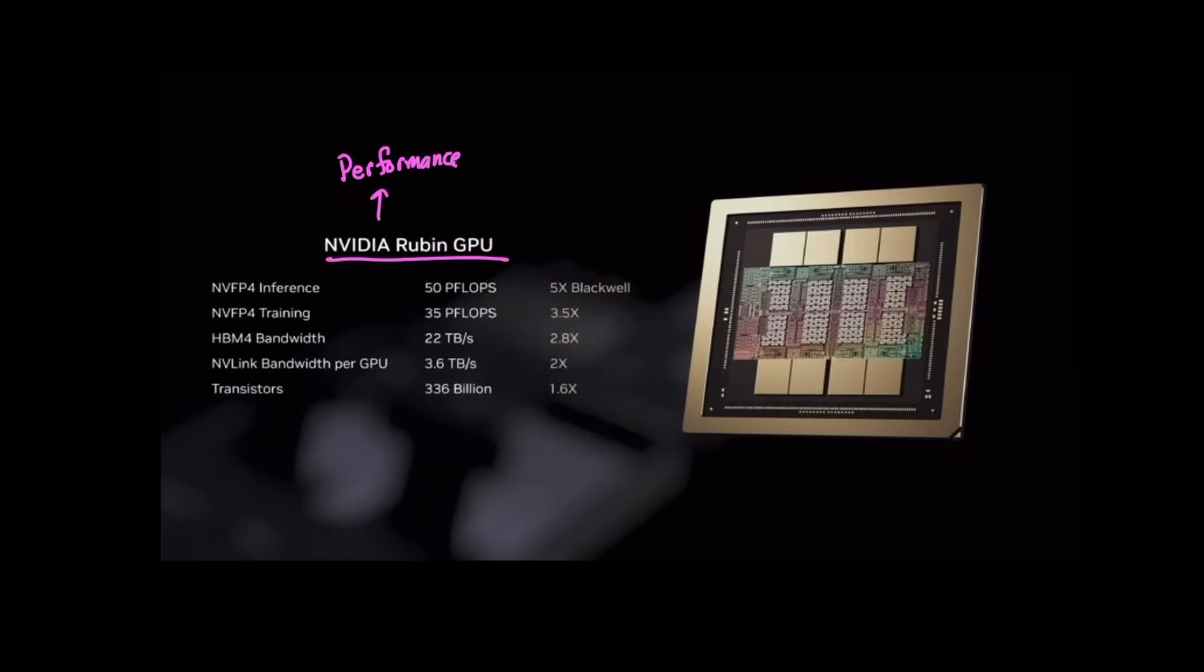The performance of the Rubin GPU did not disappoint where their NVFP4 training is expected to be 35 petaflops, which is 3.5 times faster than their previous Blackwell chips, and inference is expected to be 50 petaflops, which is 5 times Blackwell chips. Not to mention, they also increased their NVLink bandwidth to 3.6 terabytes per second and HPN4 bandwidth to 22 terabytes per second.